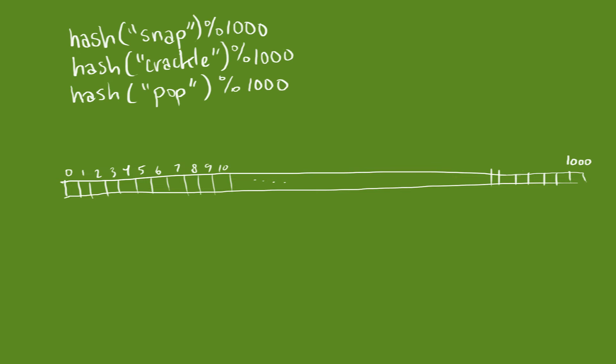Let's create an array with a thousand spaces in it. For each server, we hash the server name and then put the name in the array at the hashed position.